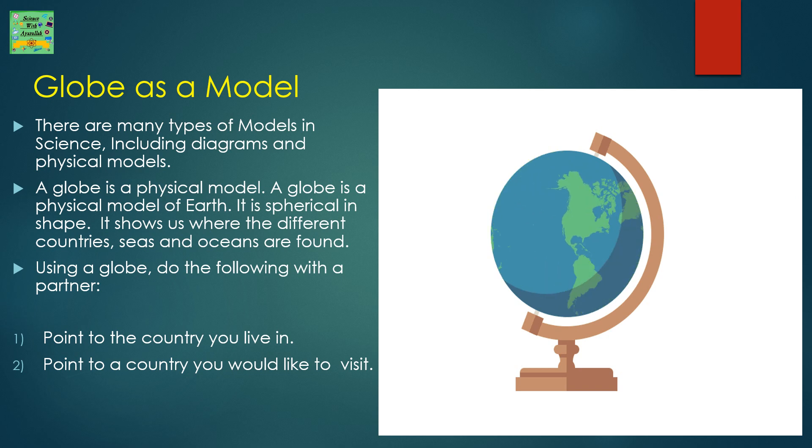Globe as a model. There are many types of models in science, including diagrams and physical models. A globe is a physical model of Earth. It is spherical in shape. It shows us where the different countries, seas, and oceans are found.